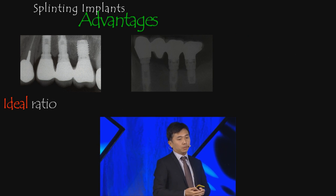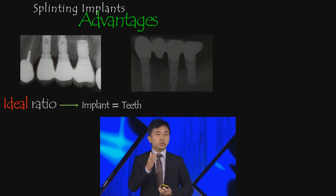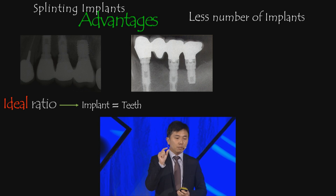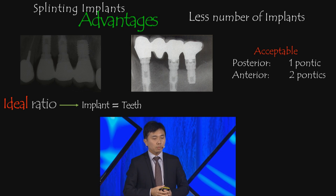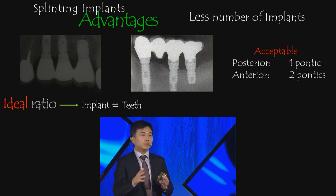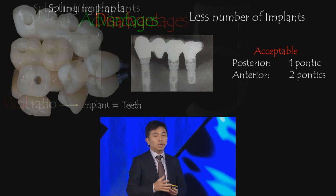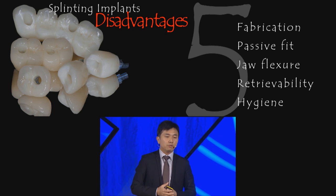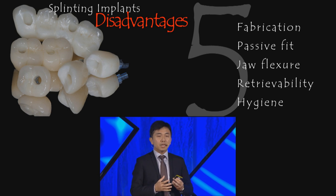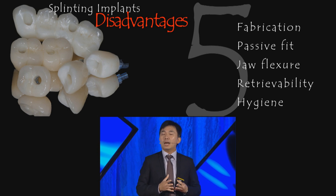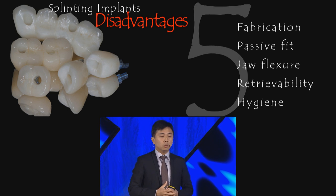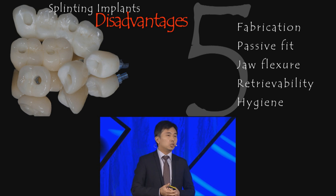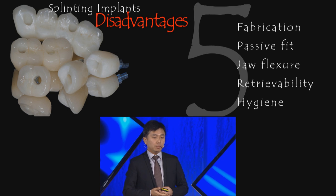The ideal ratio for posterior replacement is one implant per missing tooth. The maximum number of pontics allowed is one for the posterior and two for the anterior. Disadvantages of splinting include the need for very accurate impressions, close to passive fit, awareness of jaw flexure on the lower jaw, difficulty with retrievability, and hygiene challenges — cleaning under the pontic can be a tough situation.